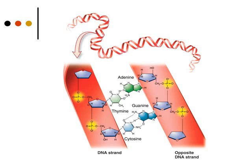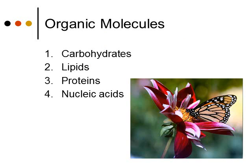RNA, on the other hand, is usually found as a single strand. RNA comes in multiple forms, and we'll cover those later when we get into how genetic information is expressed in the cell. This section is very short on nucleic acids because we'll have pretty much a whole unit devoted to them, and you'll learn a lot more about them later on.